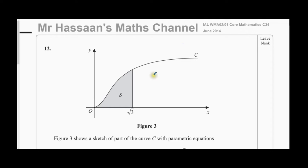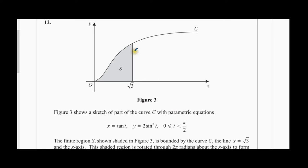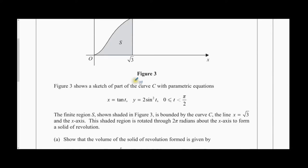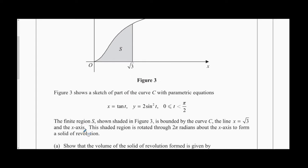The question says: figure 3 shows a sketch of part of the curve C with parametric equations x equals tan t and y equals 2 sine squared t, where t is between 0 and pi over 2. The finite region S, shown shaded in figure 3, is bounded by the curve, by the line x equals root 3, and the x-axis. The shaded region is rotated through 2 pi about the x-axis to form a solid of revolution.